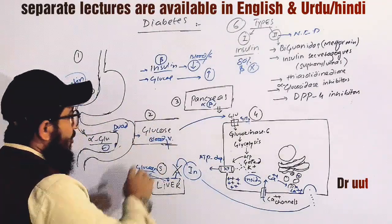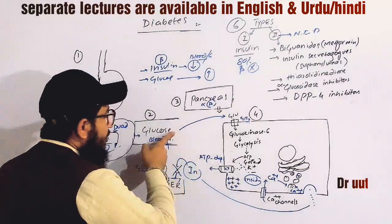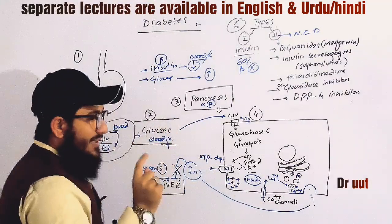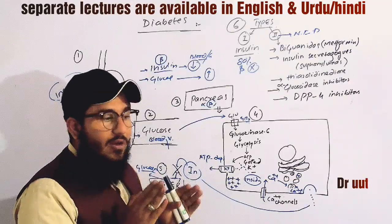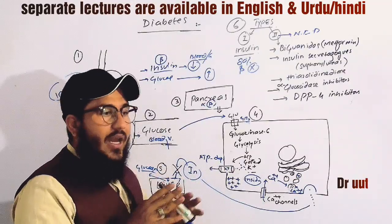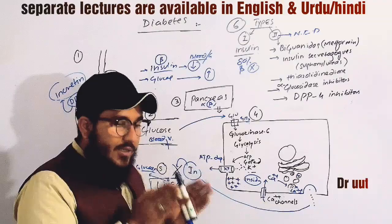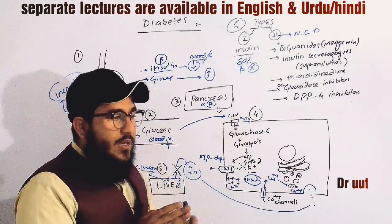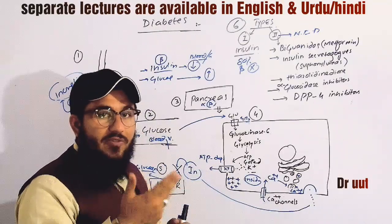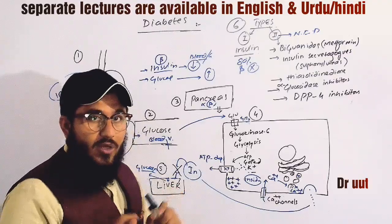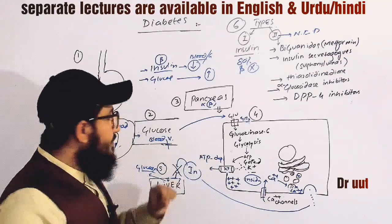When glucose enters the blood vessel, there are control centers to maintain a certain level of glucose in the body. Everything is maintained in a normal body. In an abnormal body, there is some kind of deficiency or disease. So we are talking about normal first, then we will go towards abnormal.